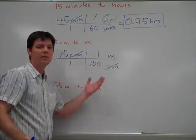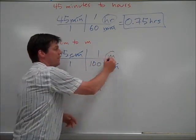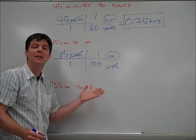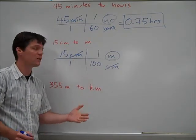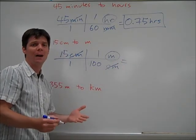We can see that centimeters cancels here and here. We're going to be left with units of meters. That's what we want in our final answer. So all we need to do now is to take 15 and divide by 100 to get the answer. So we come up with an answer of 0.15 meters.